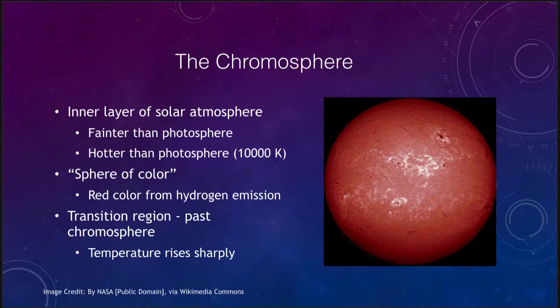Now if we move a little further out from the photosphere there is a little more to the Sun than just what we see. We have above that the chromosphere, the chromosphere or the sphere of color because it is a very distinct red due to the emission of hydrogen. So we look at that here. This is the inner layer of the solar atmosphere. It is fainter than the photosphere but hotter, reaching temperatures of 10,000 Kelvin.